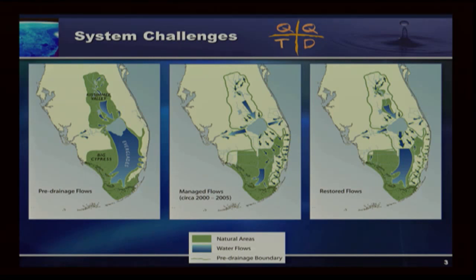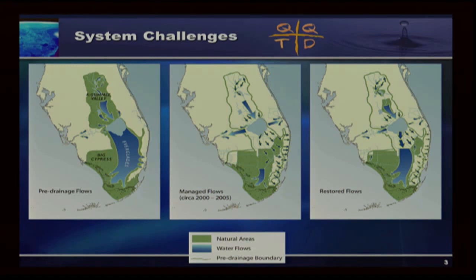What we found as we've gone through this Everglades restoration process is that these are really four key attributes that we've got to keep in mind wherever we go and wherever we do our planning — QQTD always comes into play. The graphics are very stylized; don't take a position of an arrow literally. It gives indications of how the system was pre-drainage and how water flowed down through the Kissimmee Valley into Lake Okeechobee and then spilled over the edge into the Everglades, with lesser amounts going to St. Lucie and the Caloosahatchee.